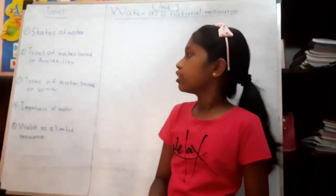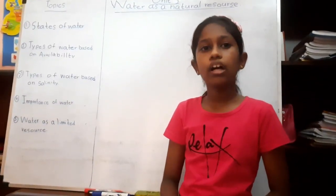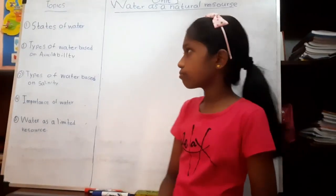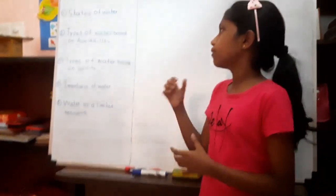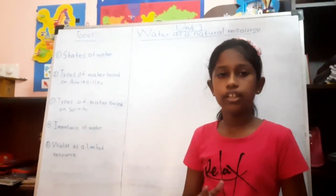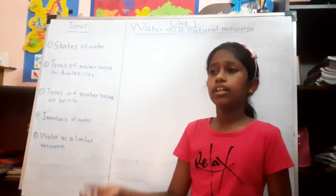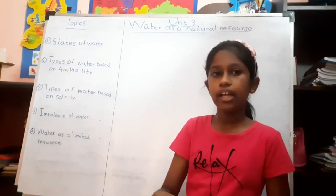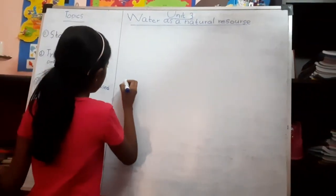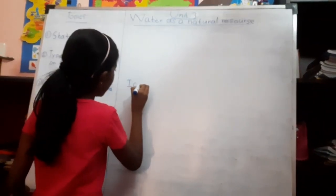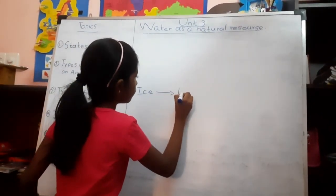First, I am going to do a simple experiment for identifying states of water. For this experiment, you will need some ice cubes, a test tube and a burner. Put some ice cubes into the test tube and burn it well. So we can observe the ice is melting. It turns into liquid water.